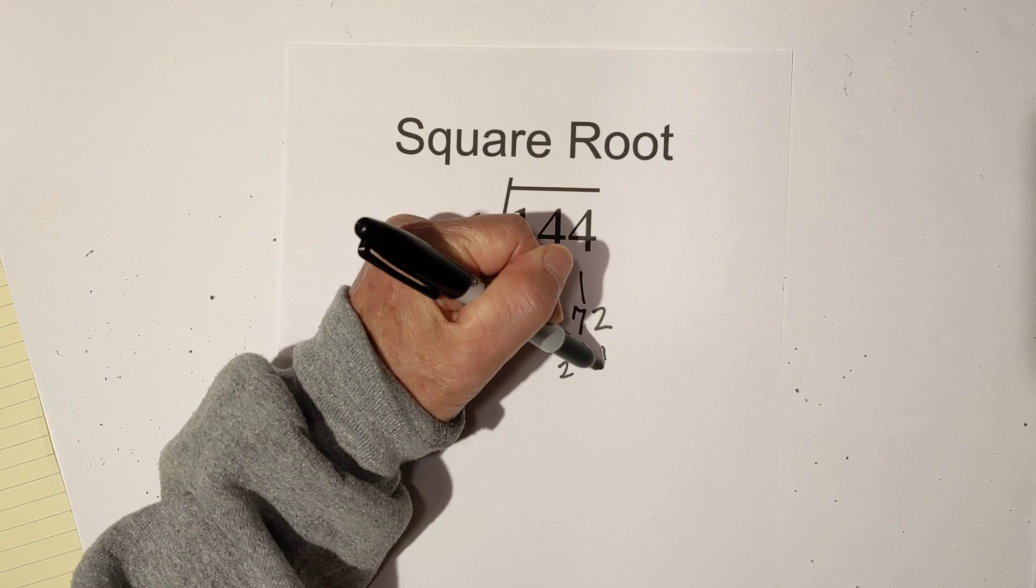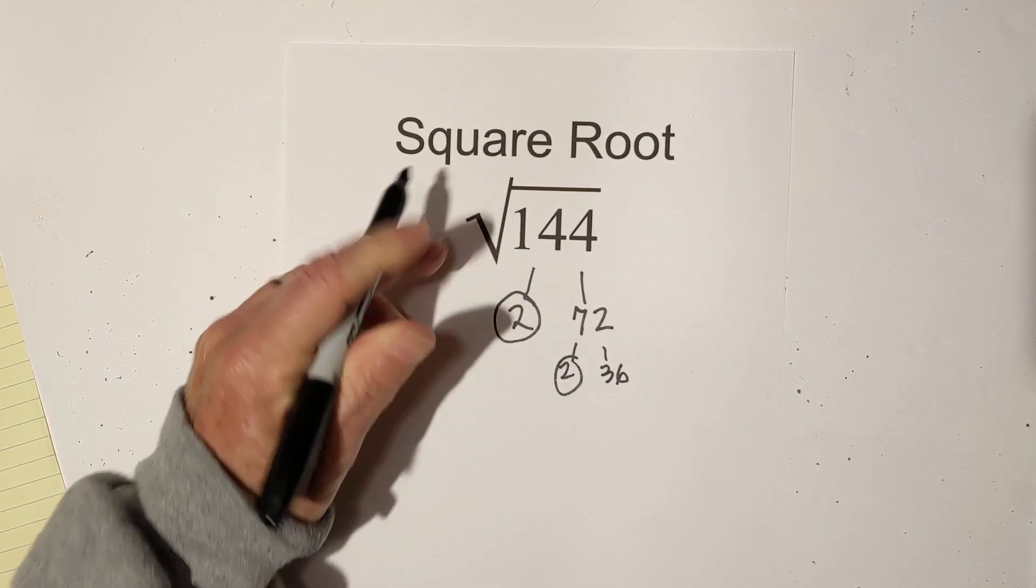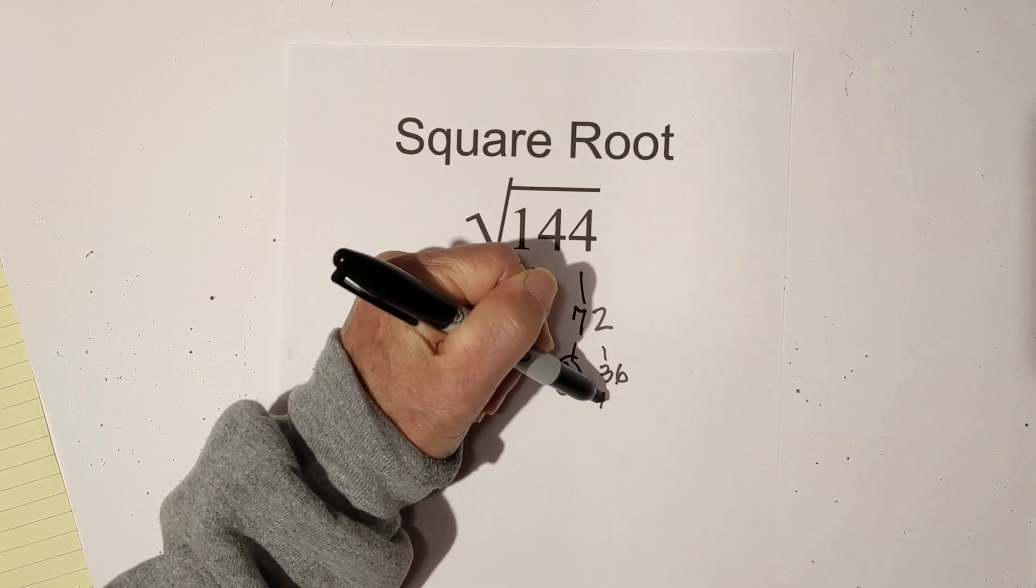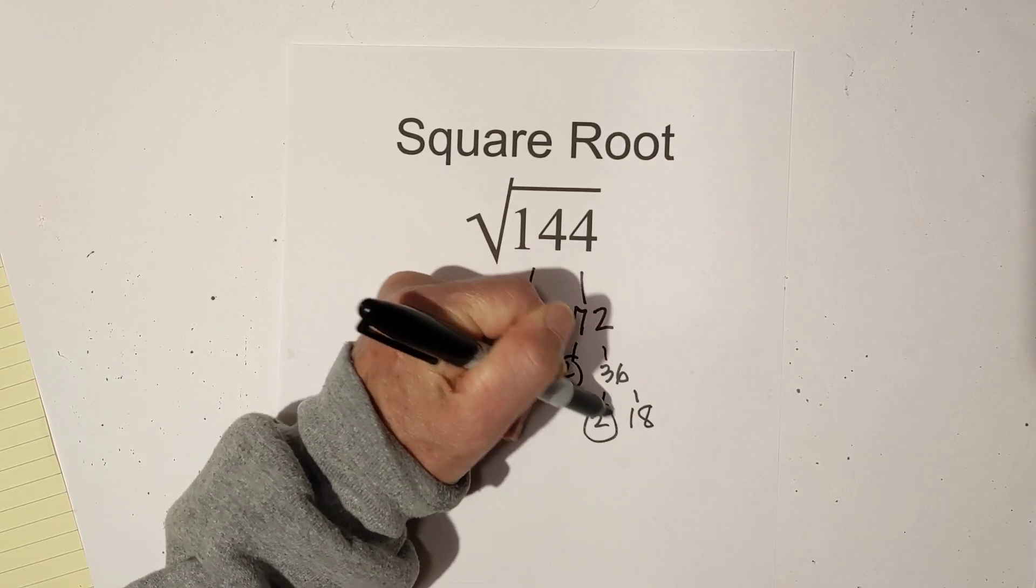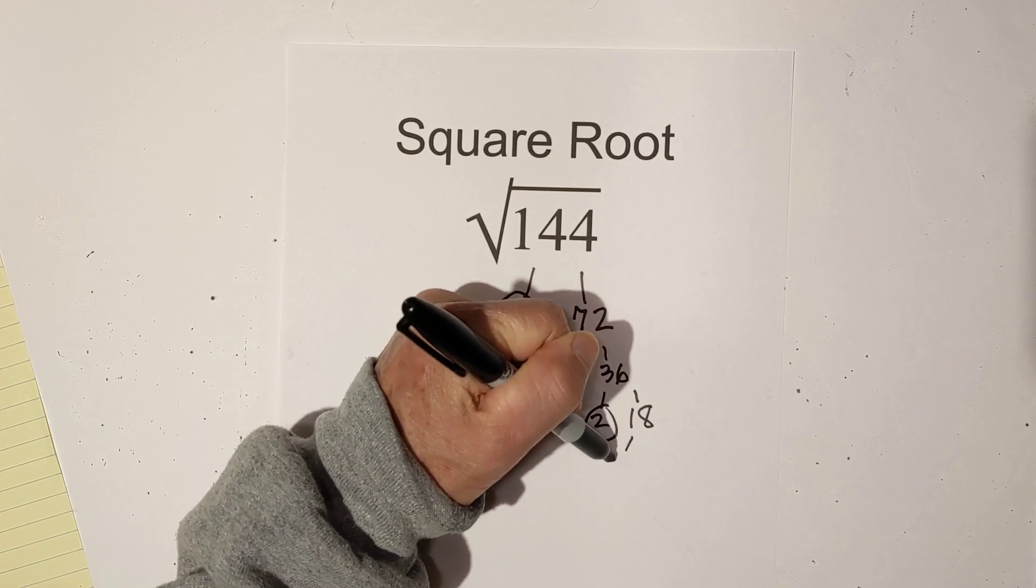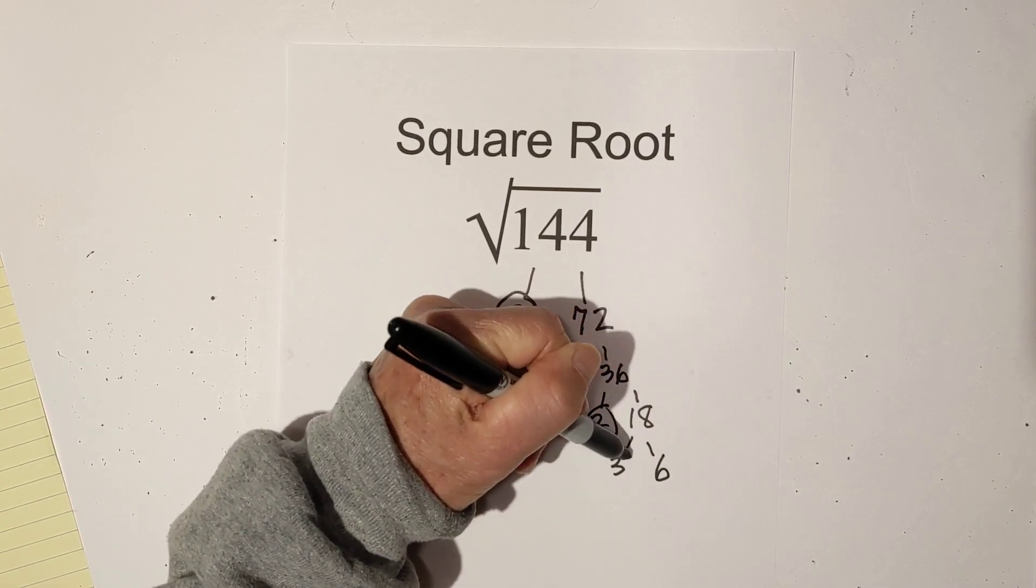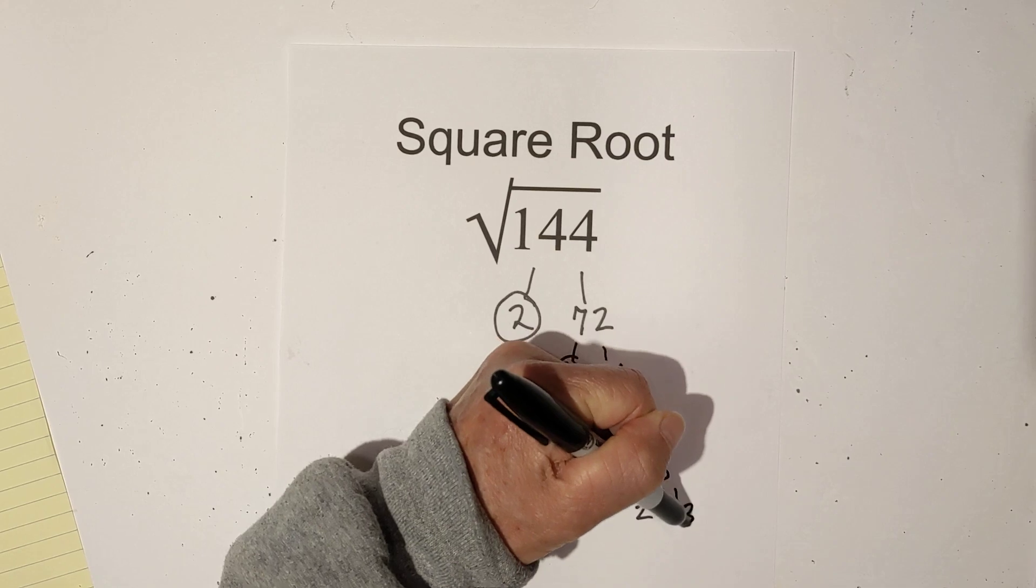And now 2 times 36. Circle the 2. It's prime. And then let's try 2 times 18. Again, circle the 2. Now let's try 3 times 6. And then 2 times 3.